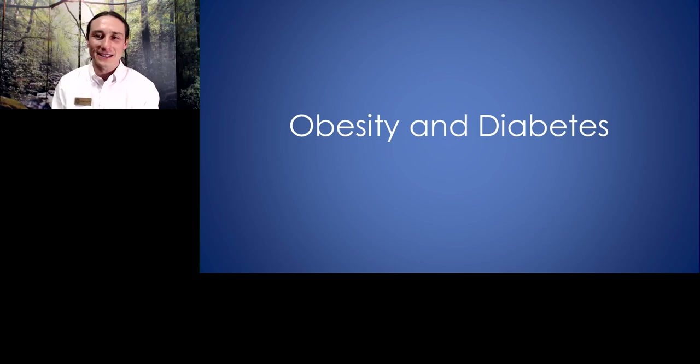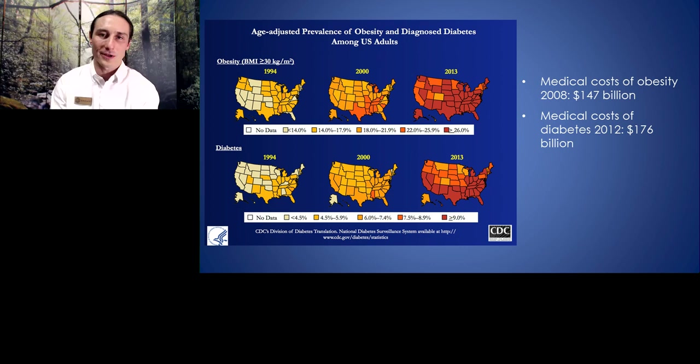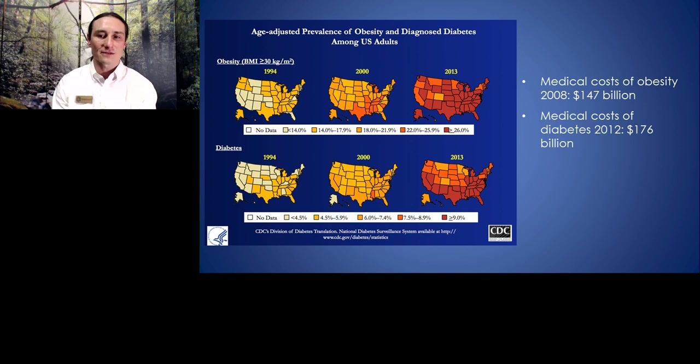Let's look at obesity and diabetes — a really alarming problem in the United States, which has sadly exported its dietary habits to the rest of the world. The rates of obesity have increased drastically over the last 20 to 25 years, and diabetes is also increasing drastically. The medical cost of obesity in the United States in 2008 was $147 billion; the medical cost of diabetes, $176 billion.